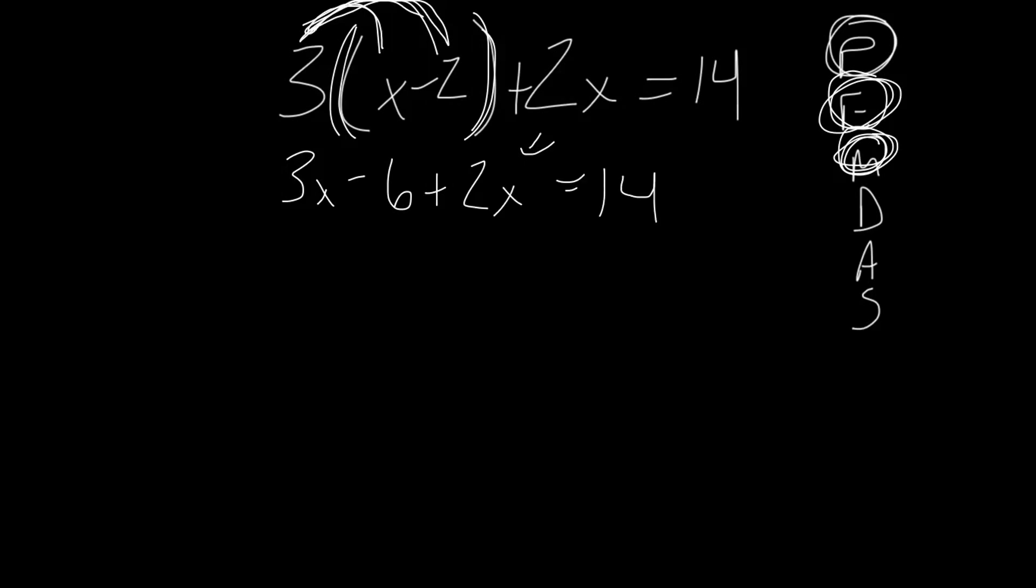Now here's where combining like terms comes into play. One thing you can do if you've got a really long equation on this side, start at this side and just circle it. That way we don't miss anything. What can 3x combine with? Can't combine with negative six, but it can combine with two x.